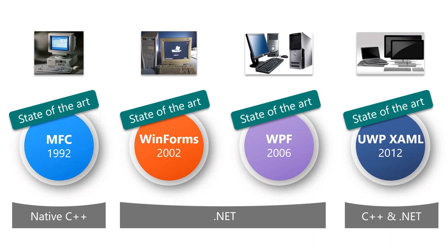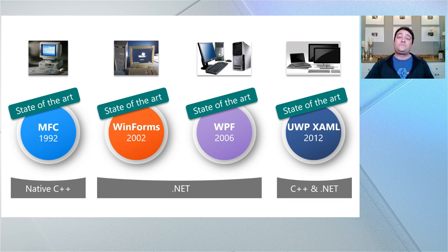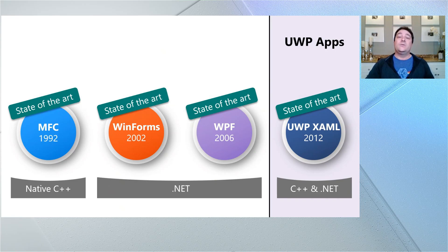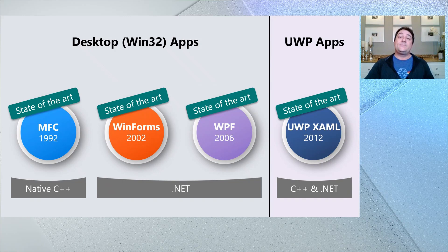UWP XAML can be used in C++ but also .NET. You might be thinking that surely UWP XAML must have been the framework to replace all the others as the new state-of-the-art. The answer, of course, is not exactly. UWP XAML only works in UWP apps, which are a different type of app than what's produced by the frameworks on the left — we call those desktop or Win32 apps. If you're a WinForms or WPF developer and you decide you want to use UWP XAML, you also have to buy into your app being a UWP app, and usually some sort of security container restriction is often the main issue there.